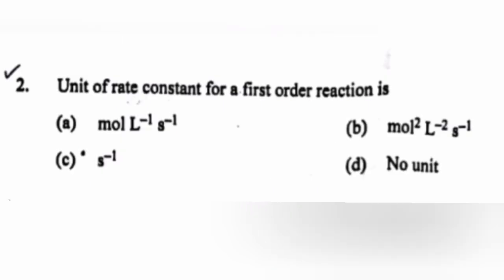2. Unit of rate constant for a first order reaction is: A. mol L^-1 s^-1, B. mol^2 L^-2 s^-1, C. s^-1, D. No unit. Answer: C. s^-1.